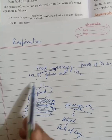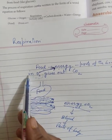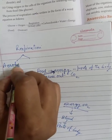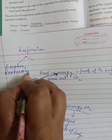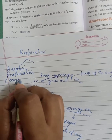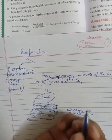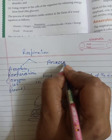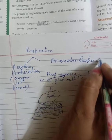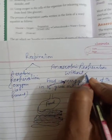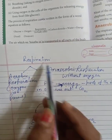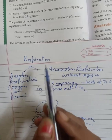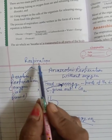So in respiration, when oxygen is present, that respiration is called aerobic respiration. In some cases, respiration also occurs without oxygen — at that time it is called anaerobic respiration, which means without oxygen. Respiration is the process of releasing energy from food. Respiration is of two types: aerobic respiration and anaerobic respiration.